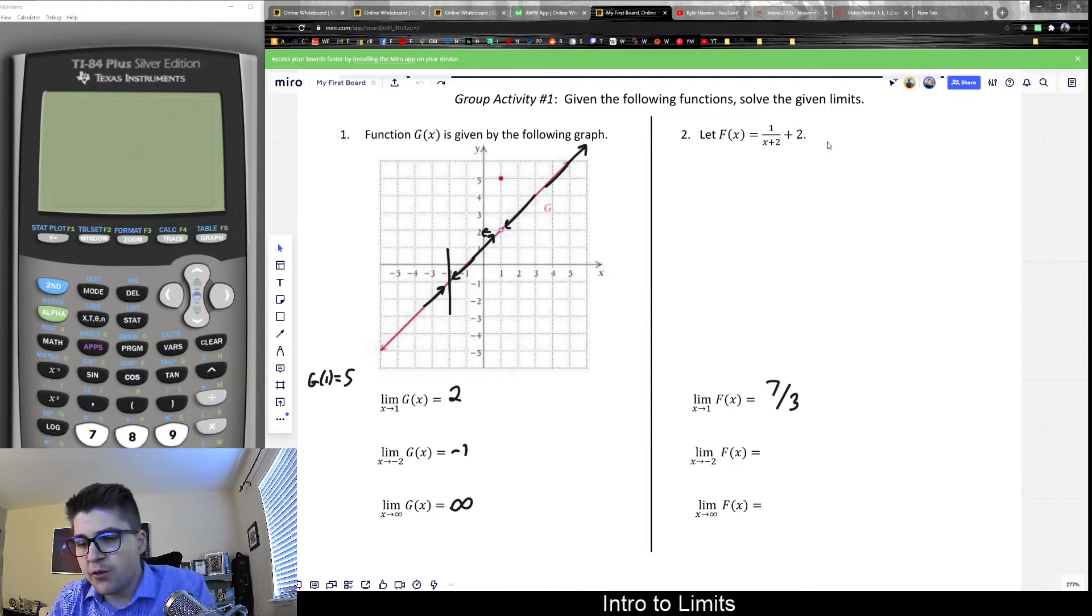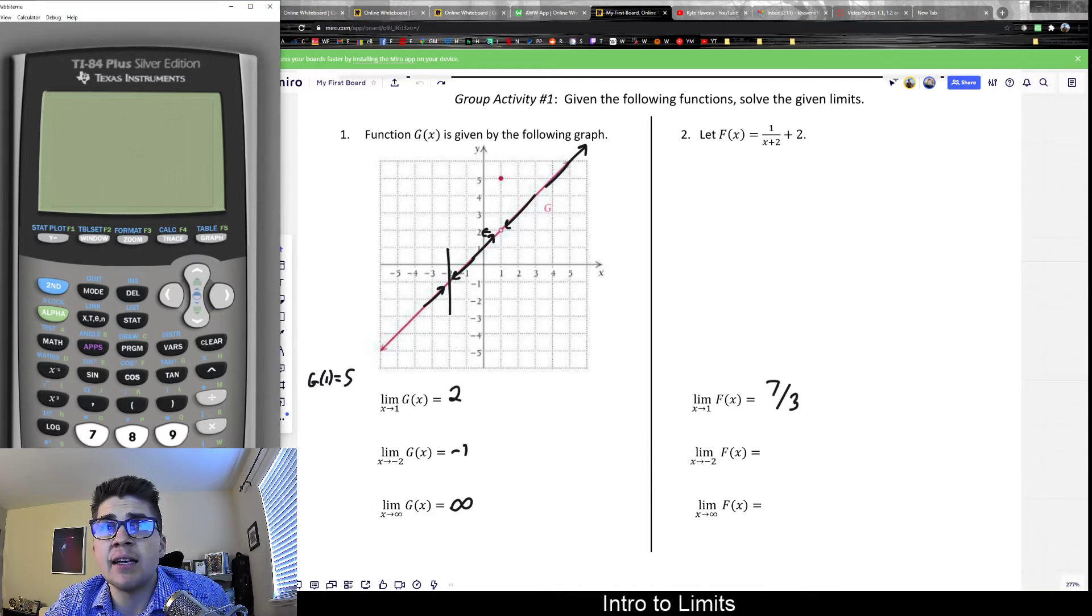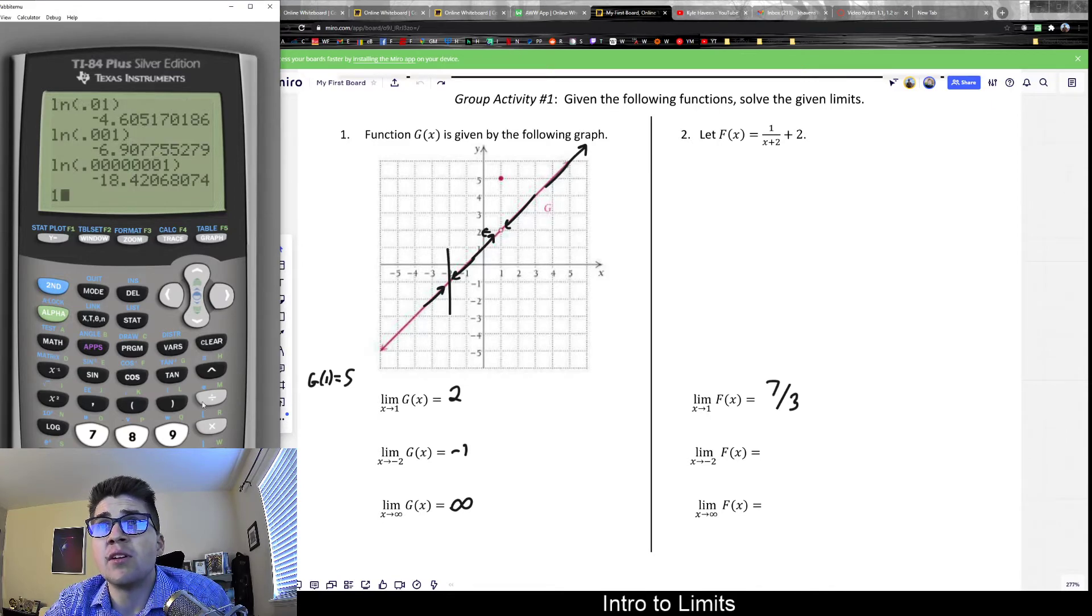And converting that to a fraction would be seven thirds. So that should approach seven thirds. Or if you're using a calculator, you should see it should get very close to 2.333 on either side. We could do that via plugging in values such as 0.9. So I'd have, let's go ahead and try that. One divided by 0.9 plus two. Whoops, I need these parentheses. Then plus two. And that would give me 2.34.